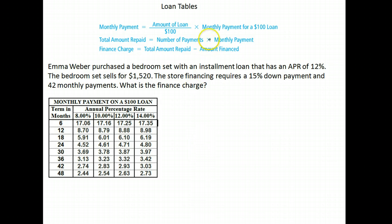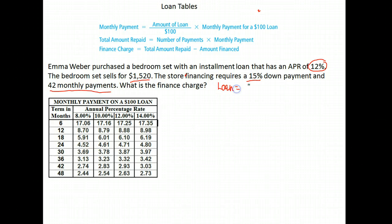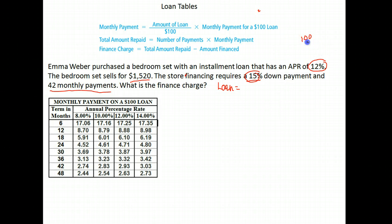Here we have a question about Emma Weber. She purchased a bedroom set with an installment loan. Her APR is 12%, the bedroom set sells for one thousand five hundred and twenty dollars. The store financing requires a 15% down payment and then 42 monthly payments. What is the finance charge? Again, first we have to find the amount of the loan. The store requires 15% down, so let's use the complement method — if you pay 15% down, what percent is left to borrow? We get 85%.